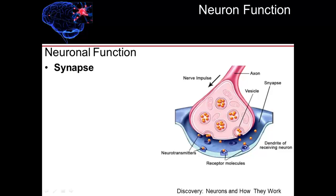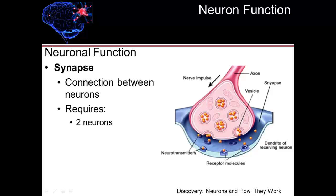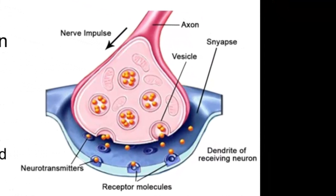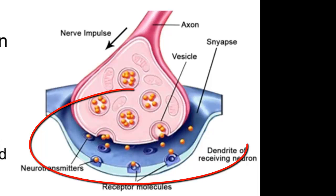That junction between the axon terminal and the second neuron is referred to as a synapse — the whole area by which two neurons are connected. It requires the two neurons, the chemical substance referred to as a neurotransmitter, and a receptor for that neurotransmitter to bind to. You can see from the right-hand side of this slide the end of the axon in pink, the little orange balls being released as the neurotransmitter, and those neurotransmitter balls binding to the receptor on the second neuron.